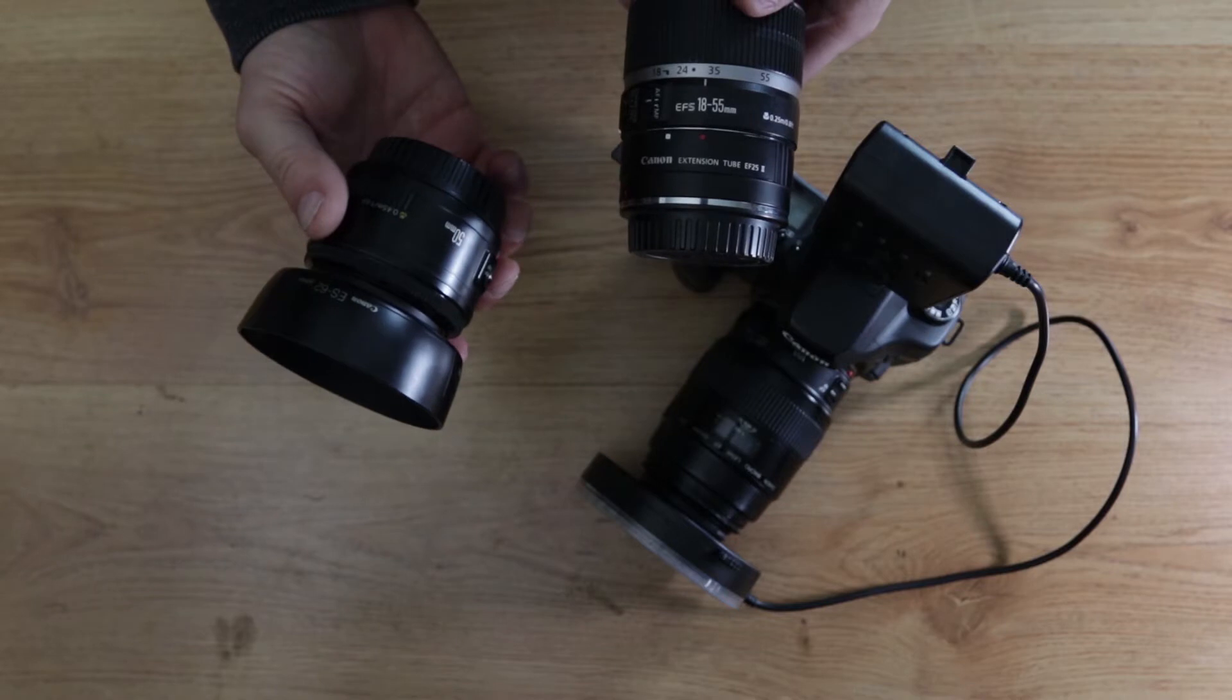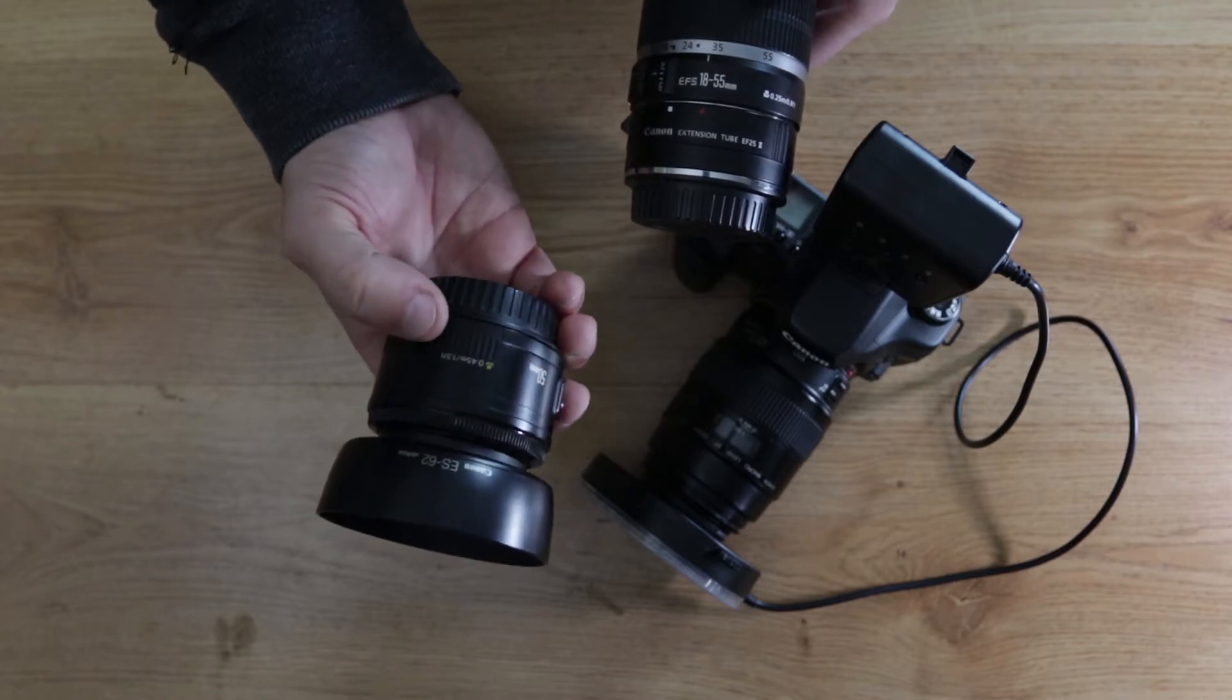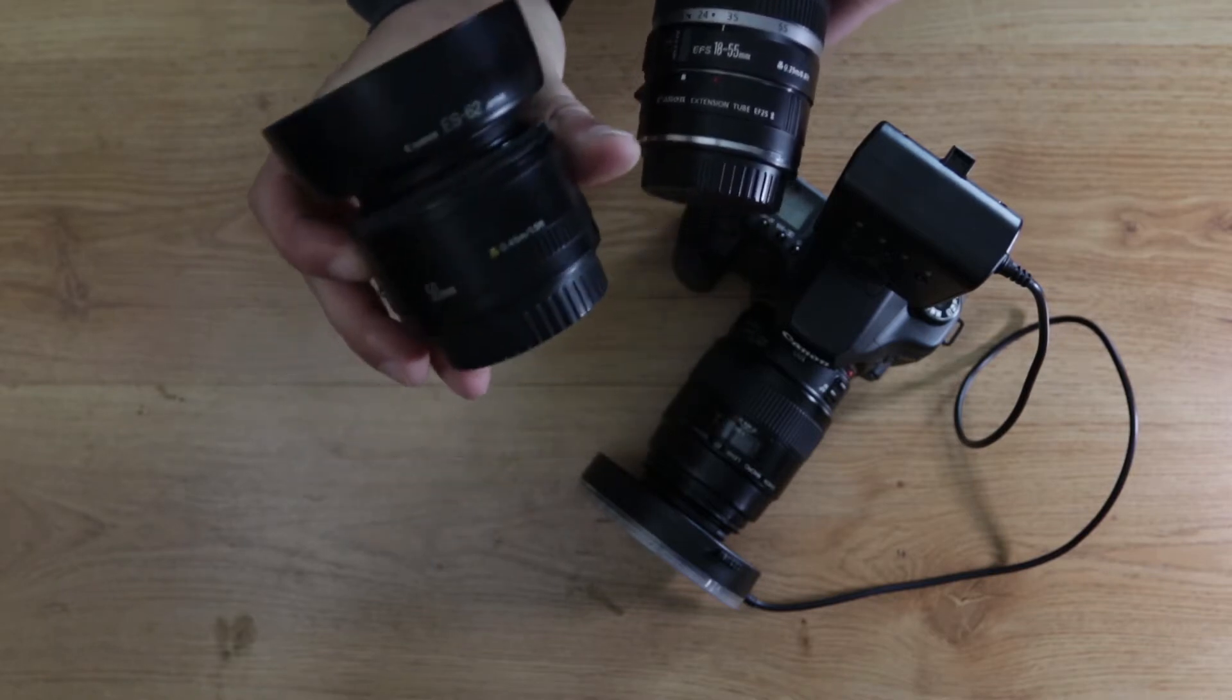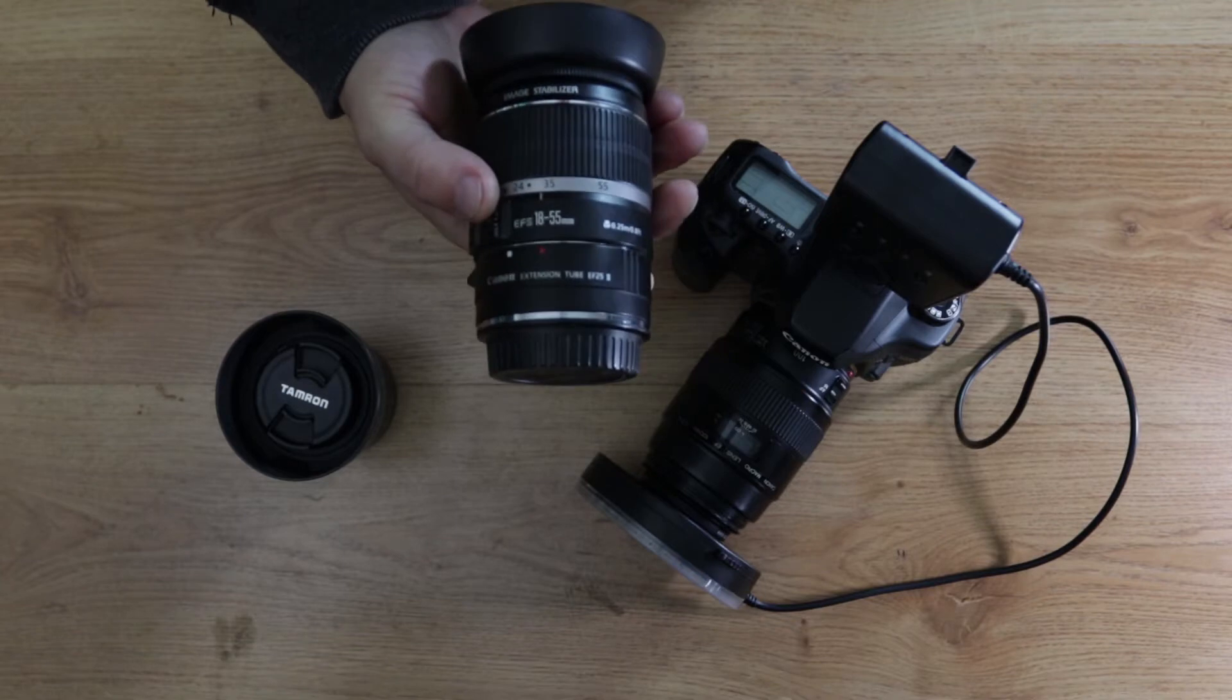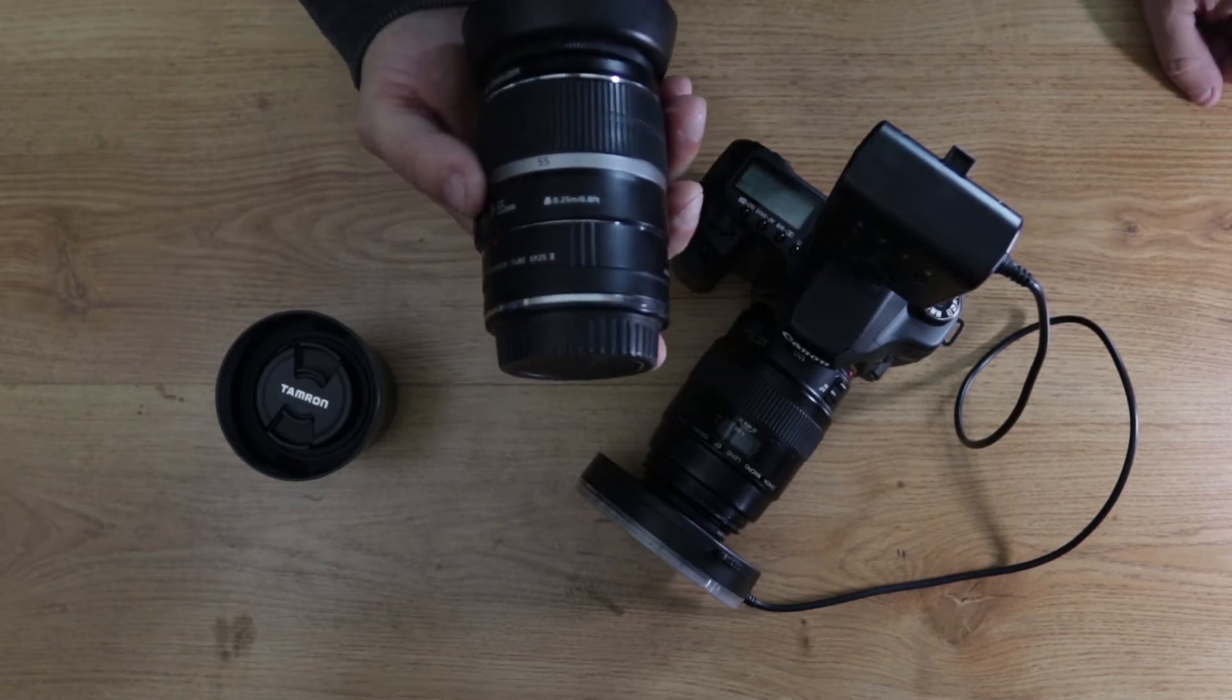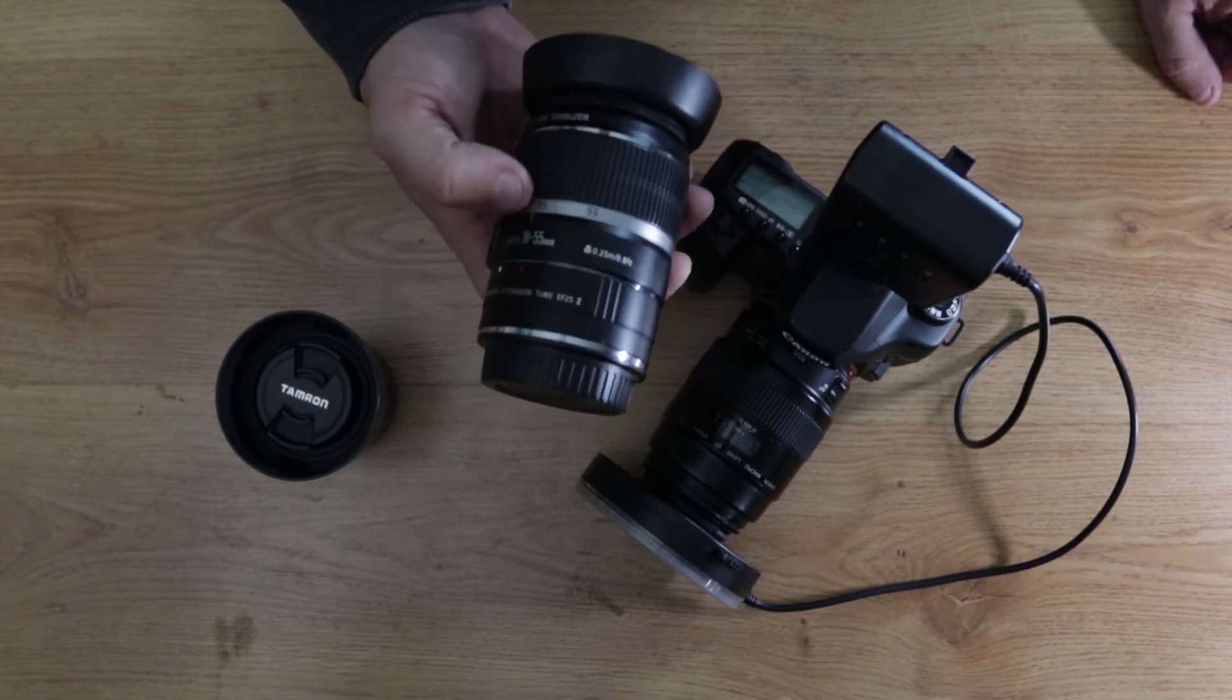The 50 millimeter, its standard focusing minimum focusing distance is 1.5 feet or 0.45 meters. The 18 to 55 kit lens has a minimum focusing distance of 0.8 feet or 0.25 meters. That's before both of those are before the extension tube, and we're gonna see how close we can get with the extension tube attached.